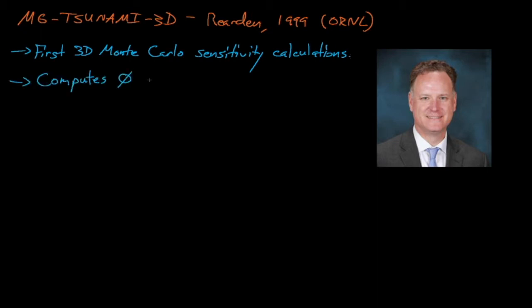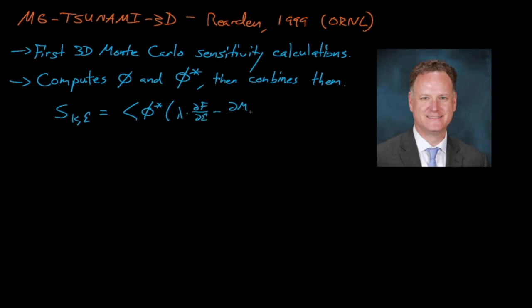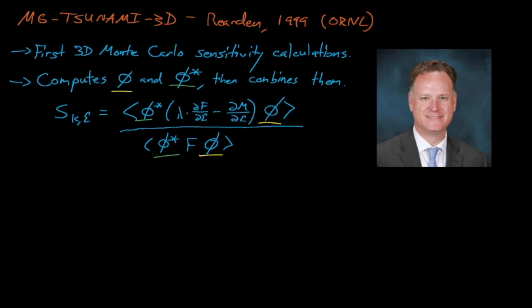Riordan's Tsunami method computed the flux as a function of space, energy, and direction in a KINO Monte Carlo simulation, and then it transposed the scattering and fission kinematics data to trick KINO into performing an adjoint Monte Carlo simulation, where it tallied the adjoint flux as a function of space, energy, and direction. Tsunami then folds these two fluxes together according to the first-order perturbation equation to estimate eigenvalue sensitivity coefficients. The Tsunami code launched a decade of work for sensitivity-based validation in criticality safety applications, and Riordan and other folks at Oak Ridge developed several of the sensitivity-based code validation methods that we'll discuss in the following lectures.